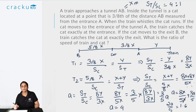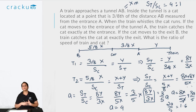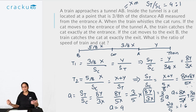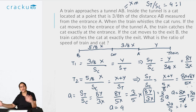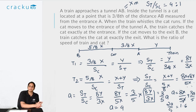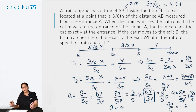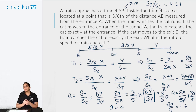In this question, it was important to identify that both scenarios are based on constant time — when the cat moves to the entrance and the train catches it exactly there, both have traveled for the same time; likewise for the exit. Once you recognize constant time, substitute the values, create the equations, and find the required ratio. This is how we answer questions based on time, speed, and distance.